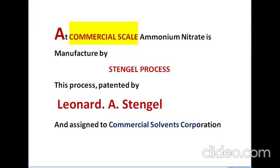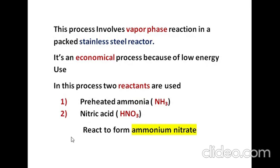At commercial scale, Ammonium Nitrate is manufactured by the Stengel process, patented by scientist Leonard A. Stengel. The recipe for production of Ammonium Nitrate was assigned to the Commercial Solvent Corporation, an American company of chemicals and biotechnology. According to the Stengel process, it involves a vapor phase reaction in a stainless steel reactor. It is an economical process due to low energy use. Two reactants are used: preheated ammonia and nitric acid.